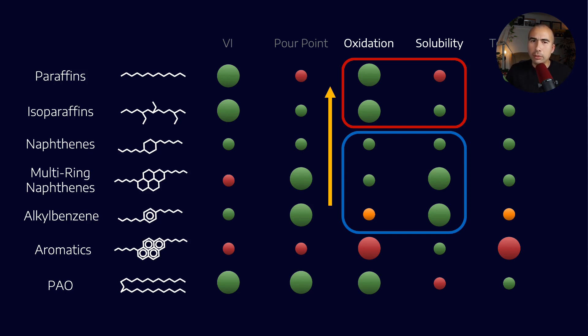How does that affect our performance? Well, notably, the oxidation stability goes up, but the solubility goes down. And we know that decreasing solubility is something which is going to cause those oxidation products to fall out of solution and cause varnish.